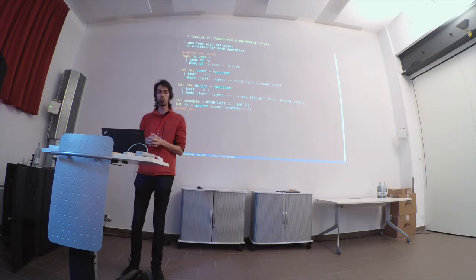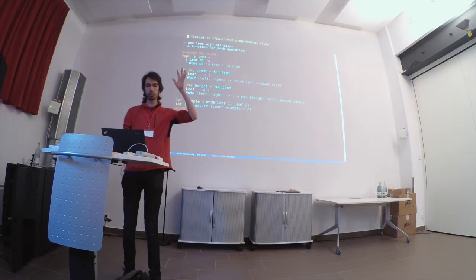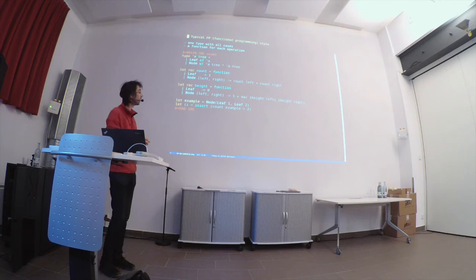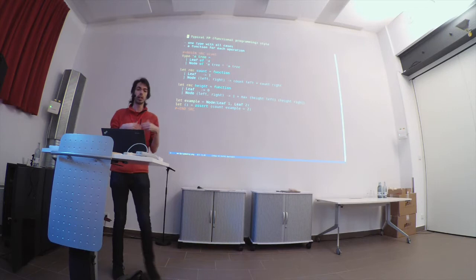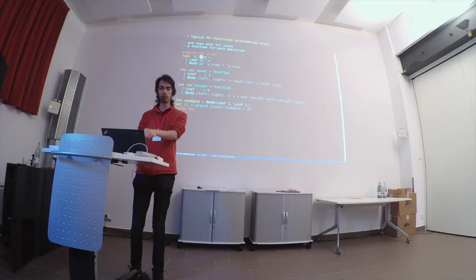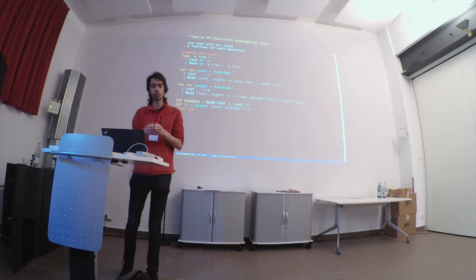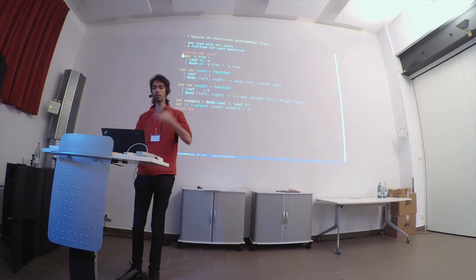In a typical functional programming style — the code in my talk is in OCaml, which most of you do not know, and that's good because everyone is on an equal footing — you would have a type with all the cases. I took a very boring and academic example: a binary tree. A tree of A is either a leaf containing some value of type A, or a node containing two subtrees: a left tree and a right tree.